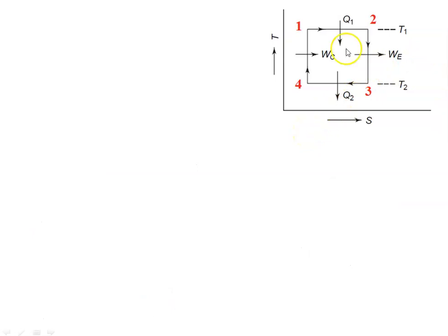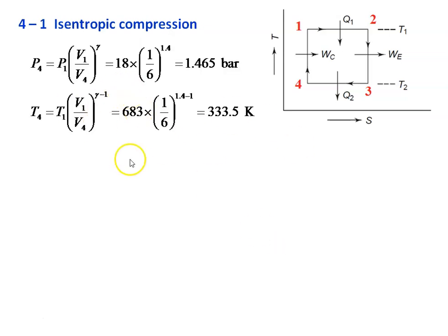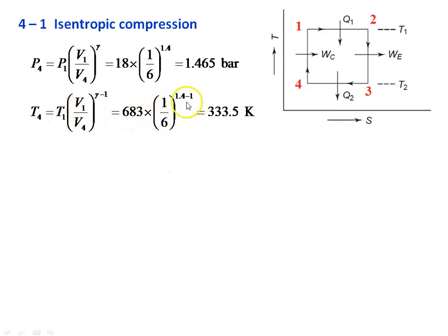This is the temperature-entropy diagram for the Carnot cycle: 1 to 2 is isothermal expansion, 2 to 3 is isentropic expansion, 3 to 4 is isothermal compression, and 4 to 1 is adiabatic compression. Now we take the isentropic compression, reversible adiabatic compression process. P4 equal to P1 into V1 by V4 to the power gamma. V4 by V1 equal to 6, so V1 by V4 equal to 1 by 6. Therefore, 18 into (1/6) to the power 1.4 equal to 1.465 bar. T4 by T1 equal to (V1 by V4) to the power gamma minus 1, so T4 equal to 683 into (1/6) to the power 0.4 equal to 333.5 Kelvin. Thus T4 equal to T3 equal to 333.5 Kelvin and P4 equal to 1.465 bar.